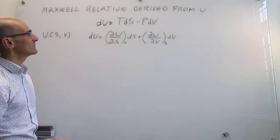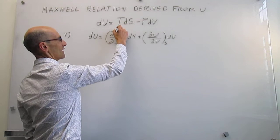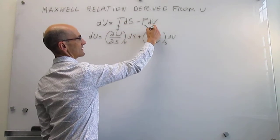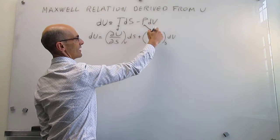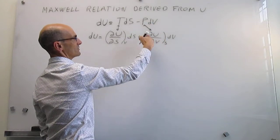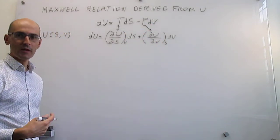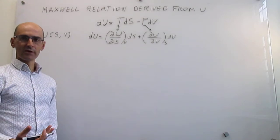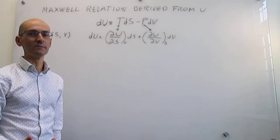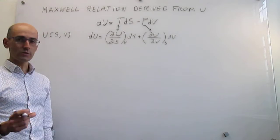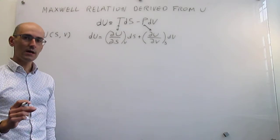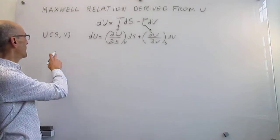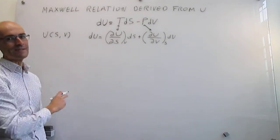This obviously means that the partial derivative of U with respect to entropy at constant volume is just the temperature, and the partial derivative of the internal energy with respect to volume at constant entropy is the minus pressure. We're making progress, but we're still not establishing any new relationships yet.